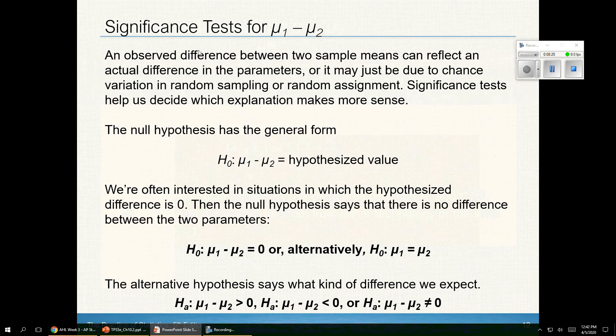Significance tests for μ₁ minus μ₂. It says the observed difference between two sample means can reflect an actual difference, or maybe we just got lucky. Significance tests help us decide which explanation makes more sense. So my null hypothesis is that μ₁ minus μ₂ equals something. In this course, it will be equal zero, meaning they're equivalent to each other. Or put a different way, the null hypothesis is that μ₁ equals μ₂.